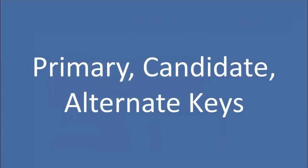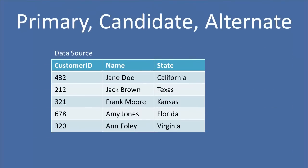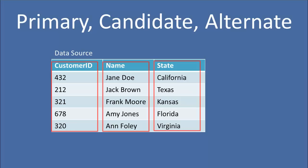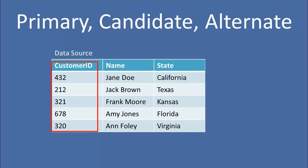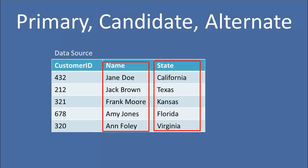Primary, candidate, and alternate keys — this is all about identifying a unique record in some table. In this table, we actually have three candidate keys: customer ID, name, and state are fields which contain only unique records, with no duplicates within any of these fields. Only one of them is going to be selected as the primary key — in this case, that's customer ID. The other candidate keys that are not selected as the primary key become alternate keys.